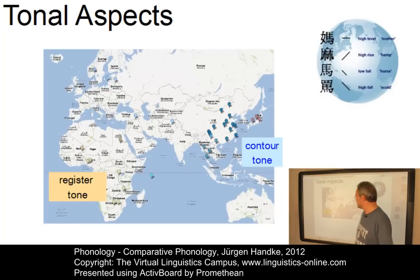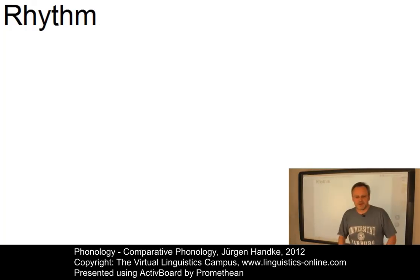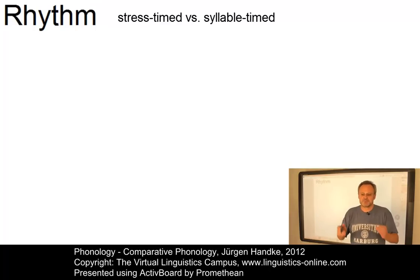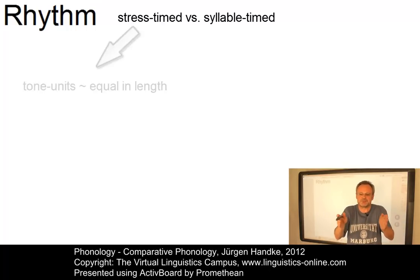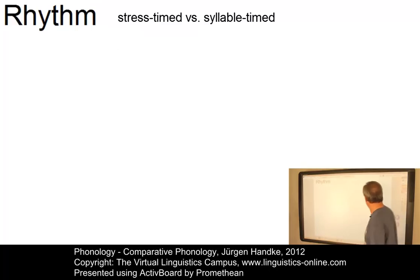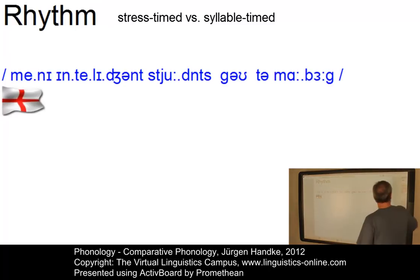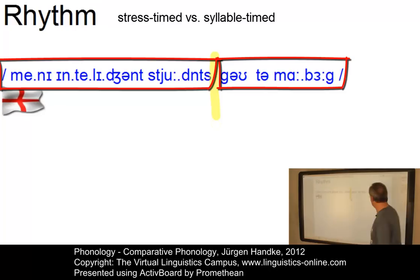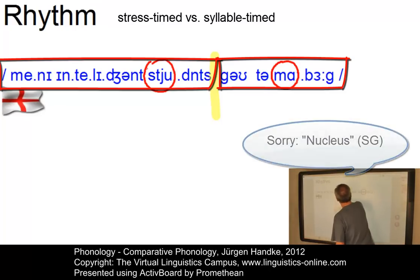Let's finally discuss the aspect of rhythm. According to the rhythmic organization of speech, languages can be subdivided into two types. A language is referred to as stress-timed when it shows, at a given rate of speaking, a rhythmic patterning perceived as based on intervals between stressed syllables — that is, tone units with one nucleus per tone unit sound roughly equal in length. English is a typical example. In the sentence 'Many intelligent students go to Marburg', we have two tone units: 'Many intelligent students' and 'go to Marburg', with one nucleus per tone unit — 'Stu' and 'Mar' — and both tone units are roughly equal in length.